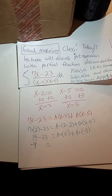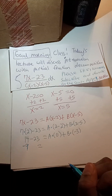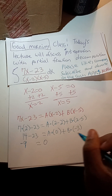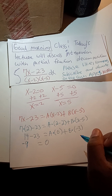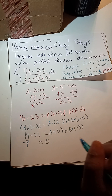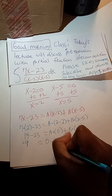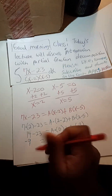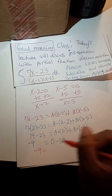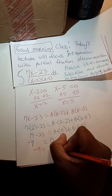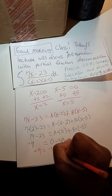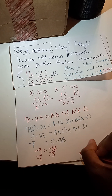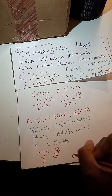So negative 9 is equal to A times 0, which is 0, plus B times negative 3, which breaks down to minus 3B. Therefore, negative 9 is equal to negative 3B. Divide both sides by negative 3, and B is equal to 3.